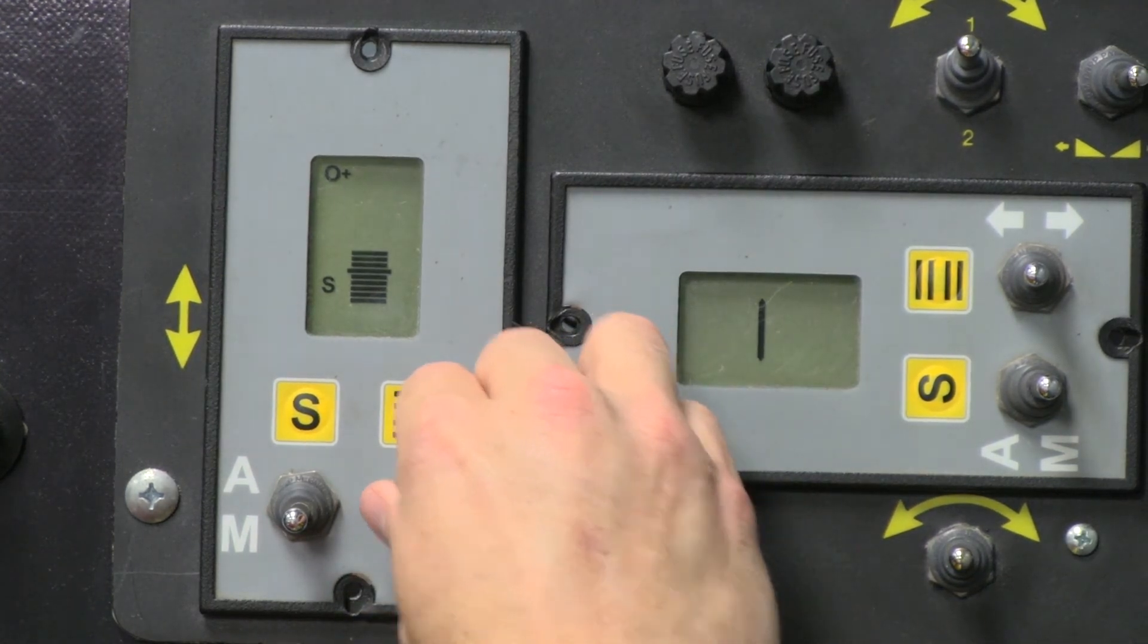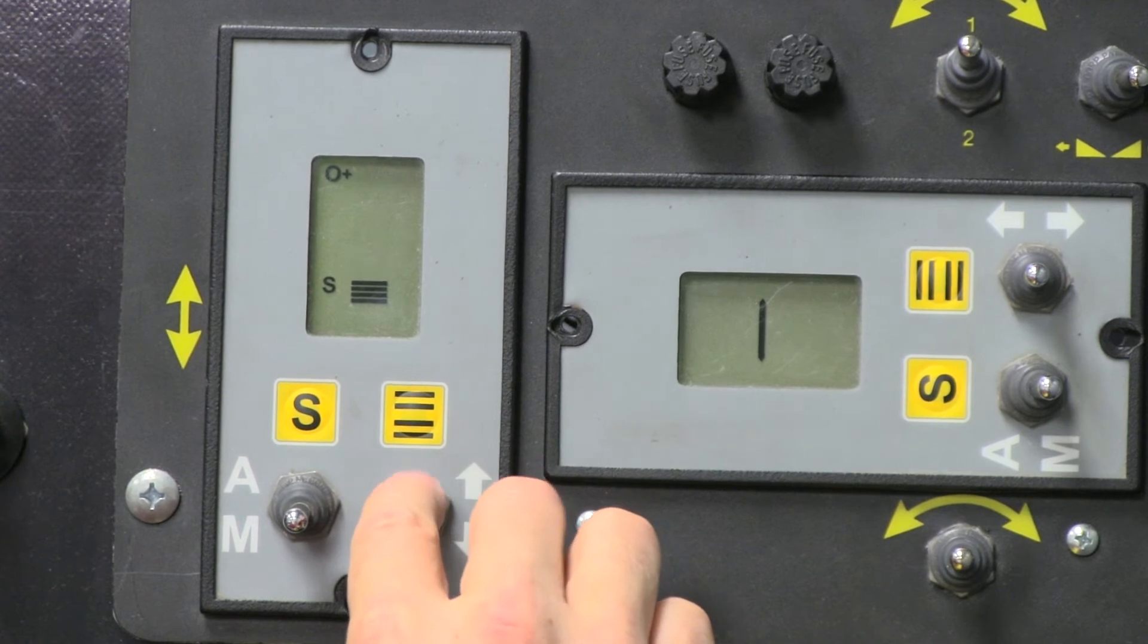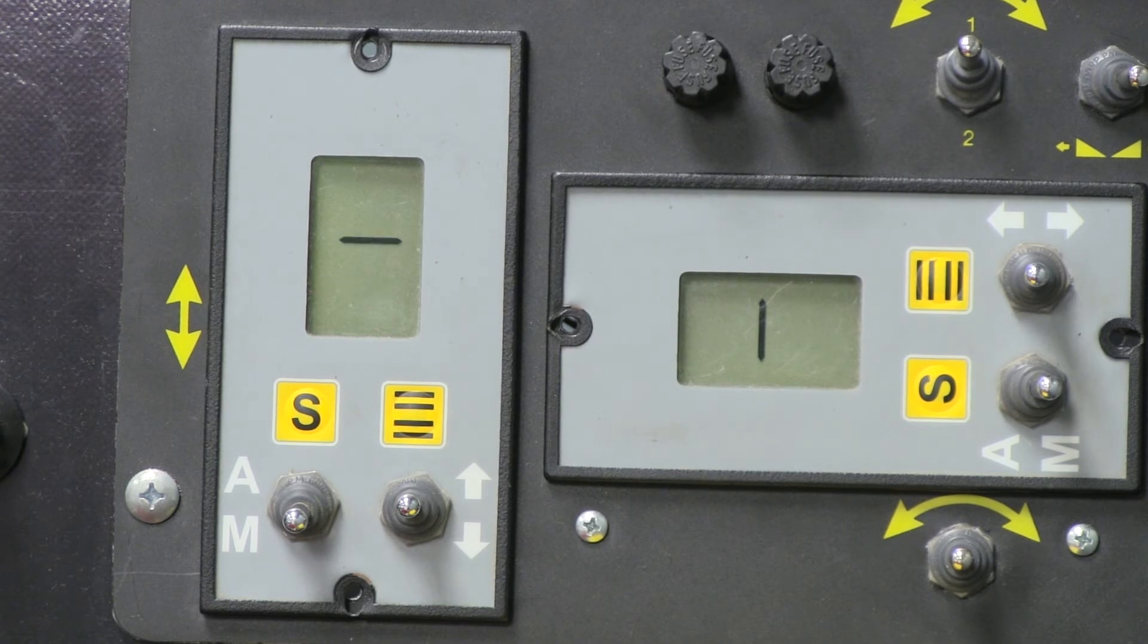The screen will change. Use the jog switch to increase or decrease the number of bars. After several seconds, the Smart Amp will revert to the original screen. More bars equals higher sensitivity. Fewer bars equals lower sensitivity.